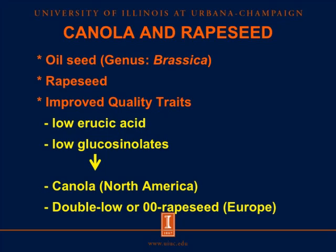Canola and rapeseed are oilseeds in the genus Brassica. Rapeseed has been developed by plant breeders to obtain low erucic acid in oil and low glucosinolates in meal. They changed the name from rapeseed to canola, especially in North America, and they may call it double zero rapeseed in Europe.